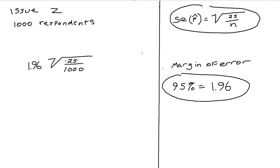You can see that's where I got my lowercase n from. If we work this out, 0.25 over 1,000 is 0.0158. If I multiply 1.96 times 0.0158,